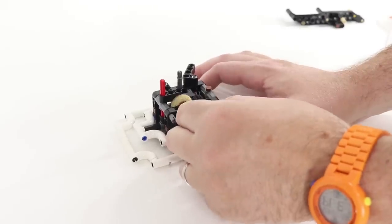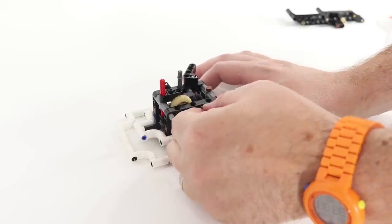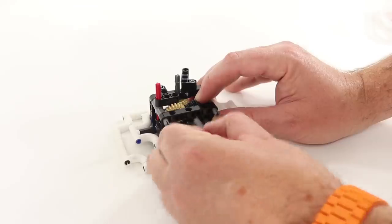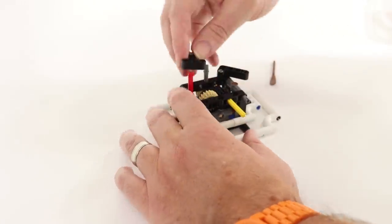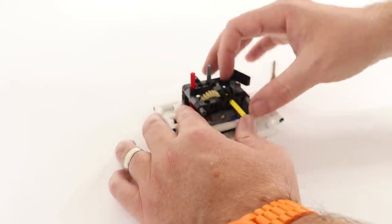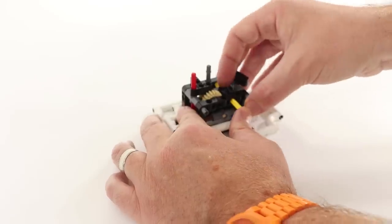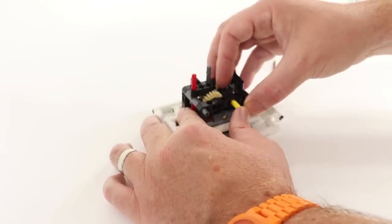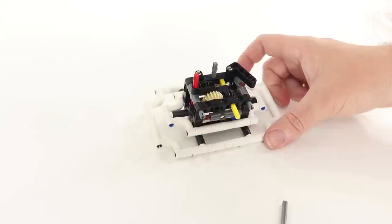I also need to remove the 6-stud long Technic axle and replace it with a 7-stud long Technic axle that will accept our Power Functions motor. This requires a little finesse as it's easy to misplace gears when pulling this Technic axle out of the gearbox.